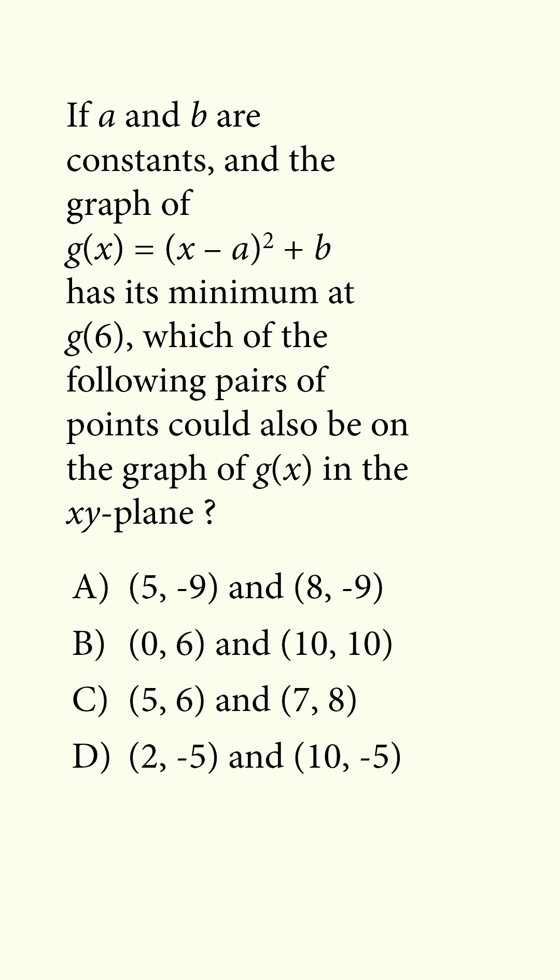If a and b are constants, and the graph of g(x) = (x - a)² + b has its minimum at g(6), which of the following pairs of points could also be on the graph of g(x) in the xy plane?